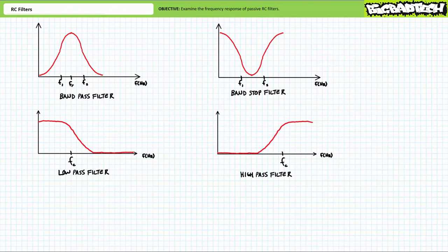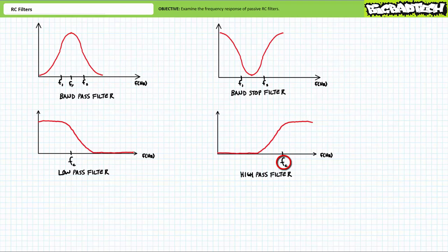Two other common filters are known as the low pass and the high pass filter. A low pass filter has one operating point known as the critical frequency FC. Frequencies below the critical frequency experience greater output; frequencies above it experience less output. A high pass filter also has one operating point known as the critical frequency FC, but its behavior is opposite — frequencies below FC experience less output, and frequencies above FC experience more output.